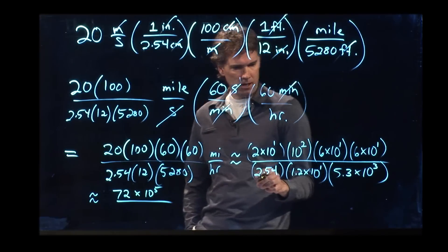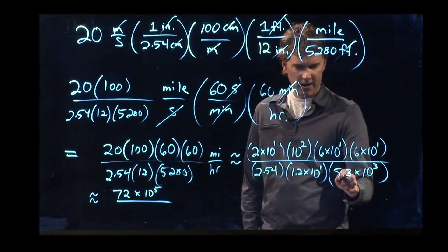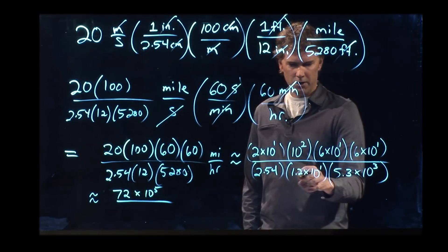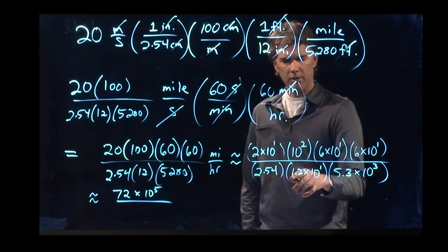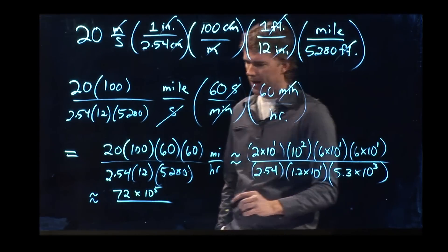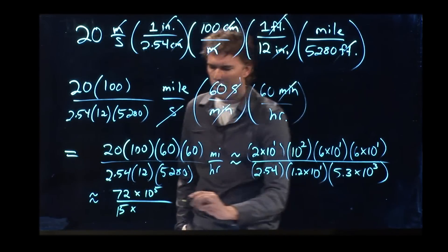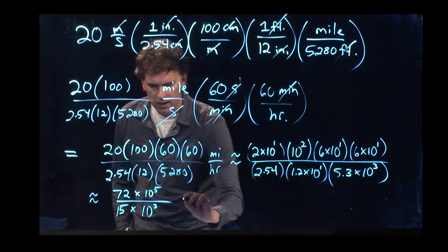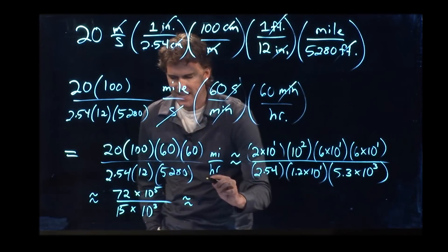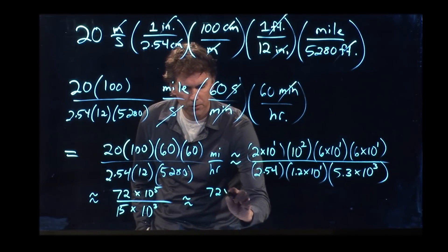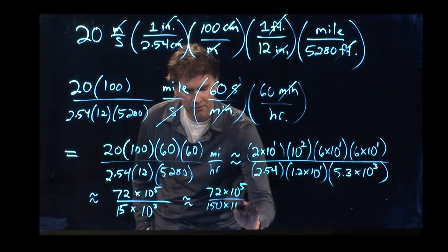Downstairs, what do we have? Well, we've got 2.5 times 1.2 times 5.3. That maybe is a little hard to do in your head, but let's just approximate it. Let's say this is a 3, this is a 1, and this is a 5. So that would be 15. And we have a 10 to the 3 down there. And so now we've got 72 over 15, or 72 times 10 to the 5 over 150 times 10 to the 2.